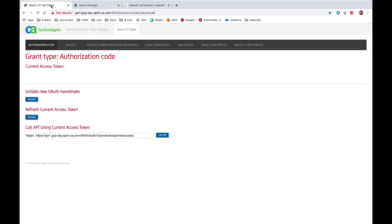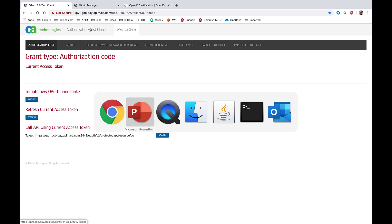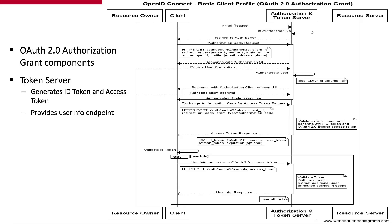To review, OpenID Connect is really a review of the OAuth 2.0 authorization code grant type that we have covered in the previous videos. In addition to the authorization code grant type, OpenID Connect requires that the client's scope of OpenID be provided during the handshake. We can see that during the authorization code request step in the sequence diagram here.